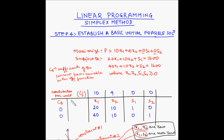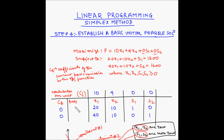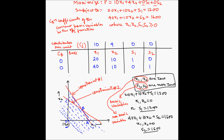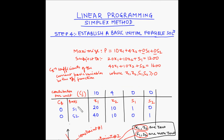The second column is the basis column, which represents the basic variables of the current solution — that is, the basic initial feasible solution. The basic variables are the nonzero variables, which are S1 and S2. So we enter S1 and S2 in the basis column. You can also first enter the basic variables and then take their coefficients from the objective function to place in the CB column.